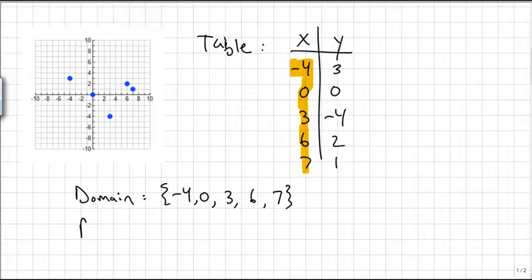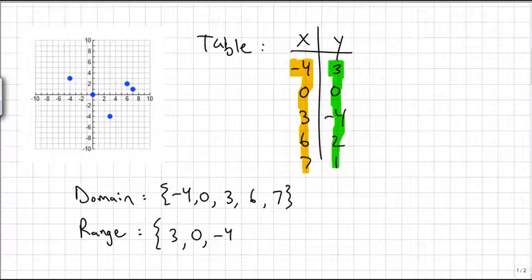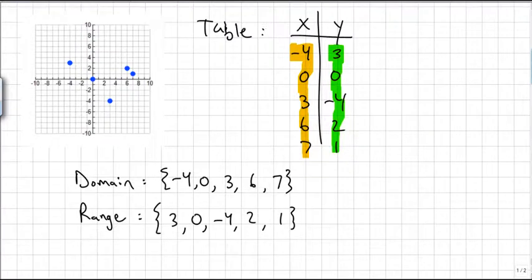The range is very similar, you just want to look at the y values. So if I go to my table of values again, these y values that I highlighted are the y coordinates of each of the dots. That's also the range. So again, the range you just put them in the curly braces: 3, 0, negative 4, 2, and 1. You can put them in increasing or decreasing order, you can just list them in the order that they occur, it doesn't really matter as long as you get them all.